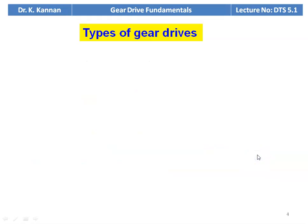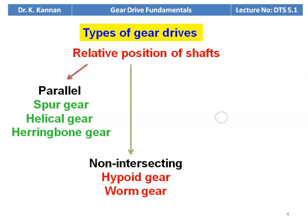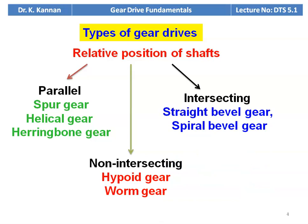There are different types of gear drive. The first classification is based on the relative position of the shaft. When the shafts are parallel, there are three types: spur gear, helical gear, and herringbone gear. For non-intersecting and intersecting shafts — when the shafts are intersecting, we have straight bevel gear and spiral bevel gear.